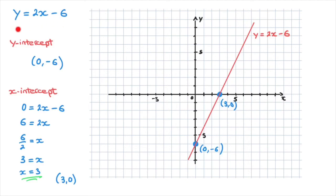So remember, to draw a line from its equation, all we need are two points. And the best points we can use are the y-intercept, that's the point at which the line cuts the y-axis, and the x-intercept, that's the point at which the line cuts the x-axis.